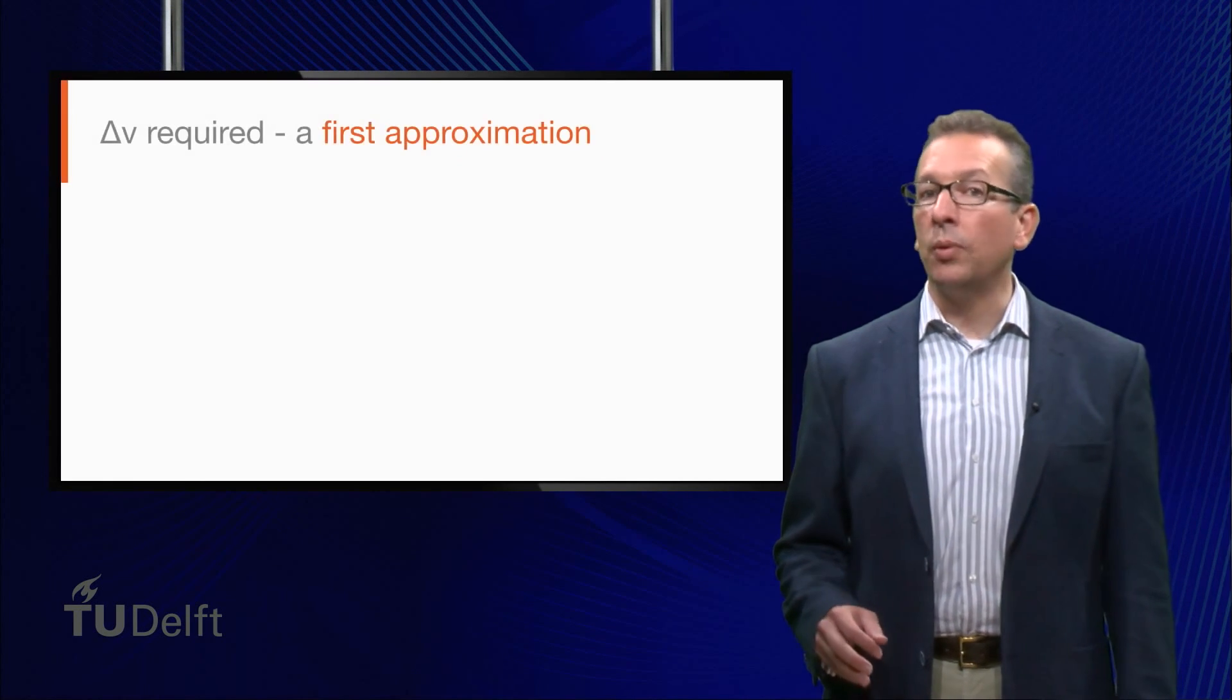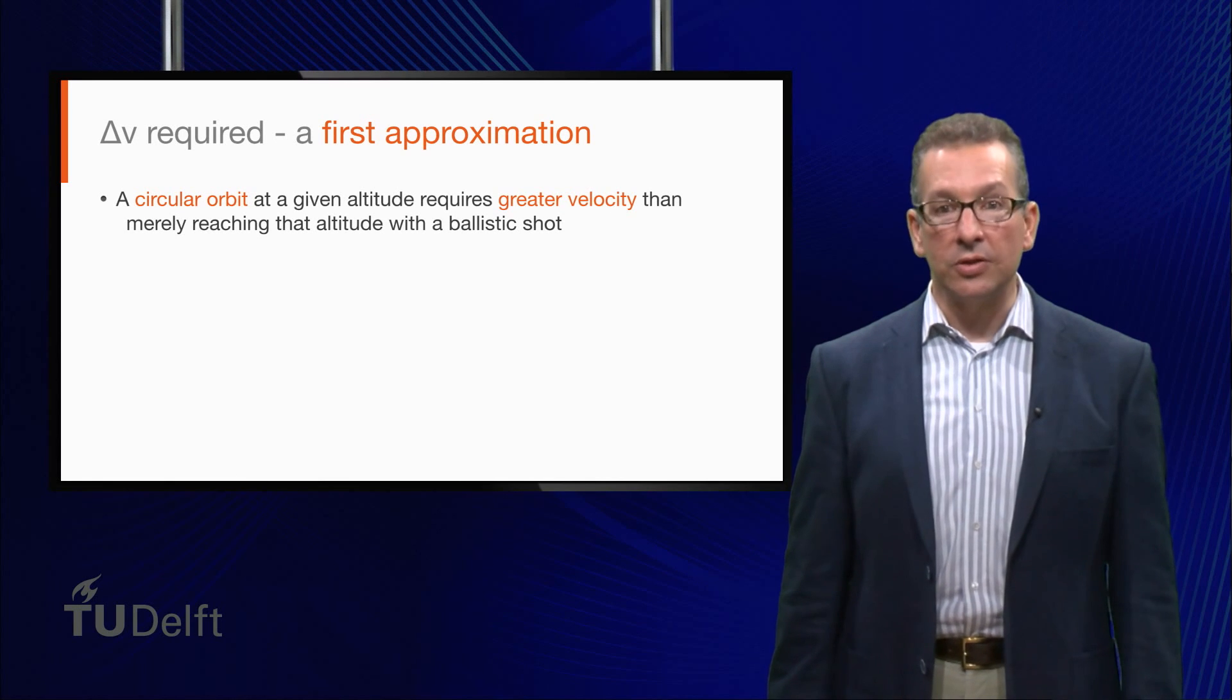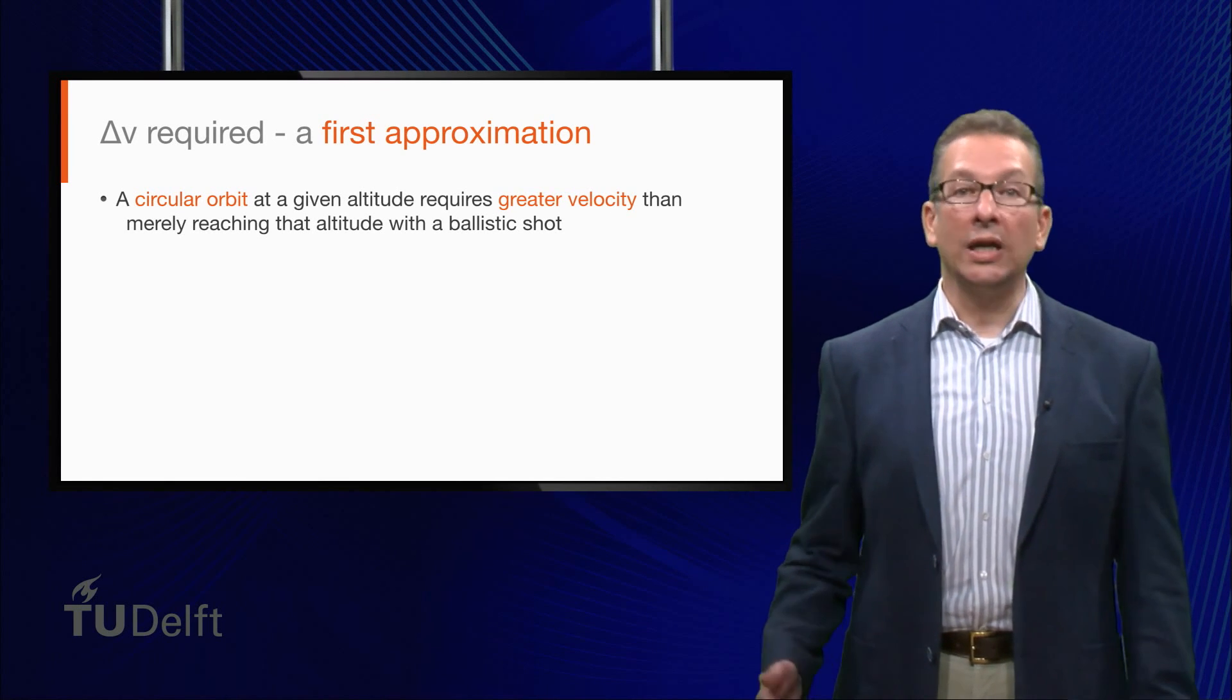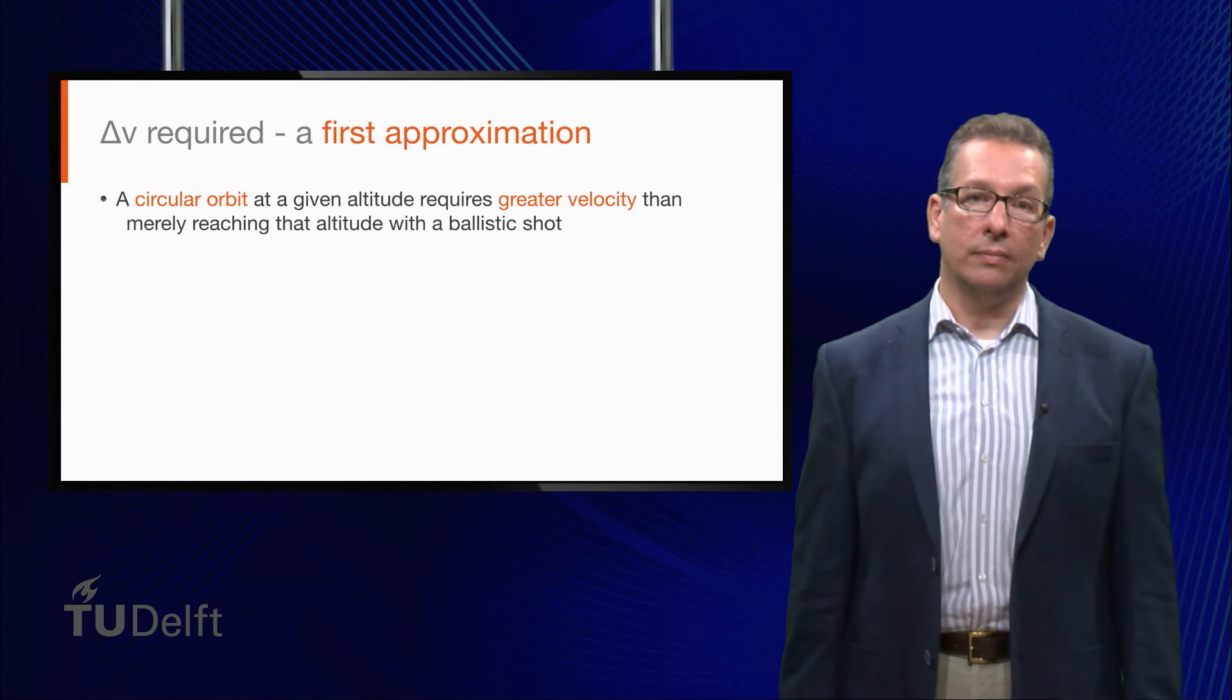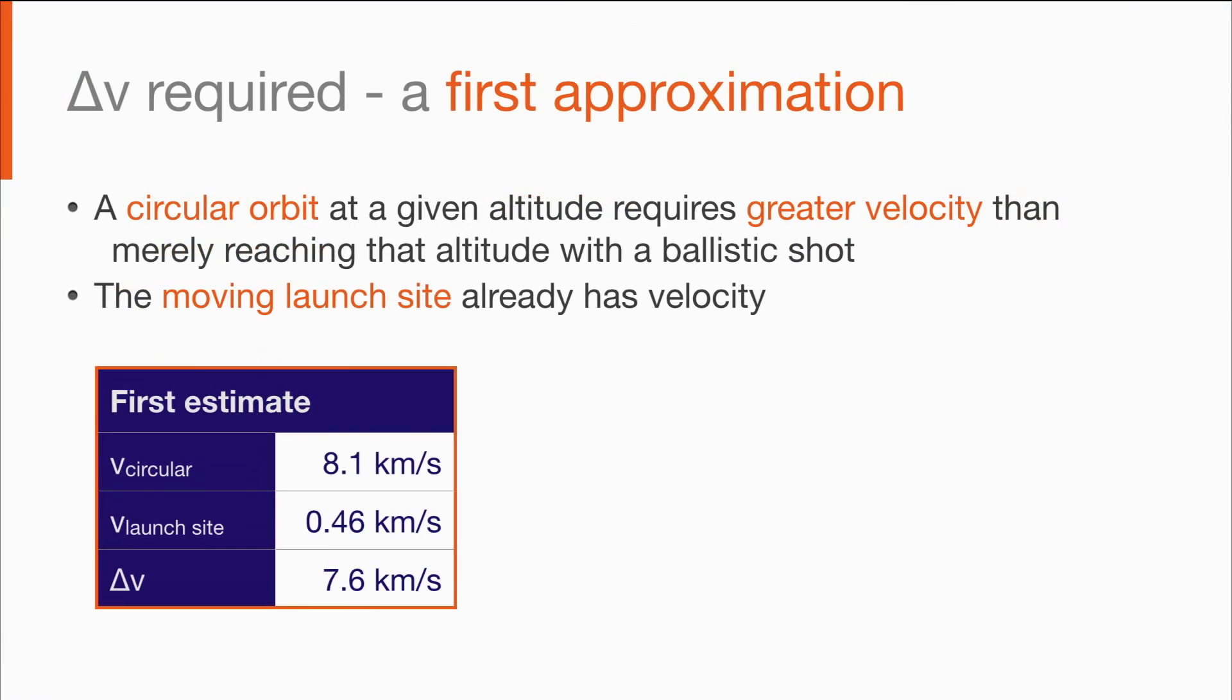On the one hand, it's important to note that we need a far greater velocity to maintain a circular orbit at this altitude than we did just to reach it. On the other hand, we get a little help from the Earth. This is because our spot on the ground, our launch site, is moving due to the Earth's rotation. If we assume our launch site is at the equator, then the ground, and our satellite with it, is already moving at almost half a kilometer per second. That means we only have to add about 7.6 kilometers per second to achieve the required velocity for a circular orbit at 300 kilometers altitude.